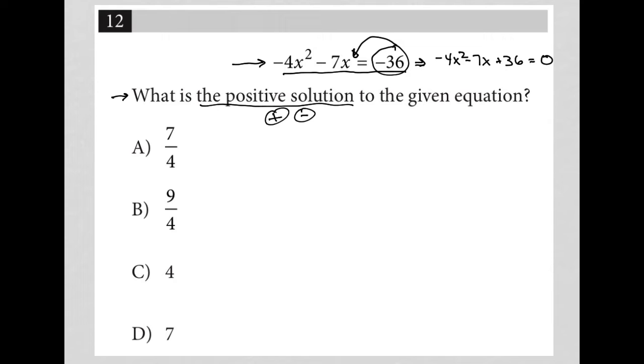And then I can use the quadratic formula in order to actually solve this question. So the quadratic formula, if you don't remember, is x equals negative b plus or minus the square root of b squared minus 4ac all over 2a.